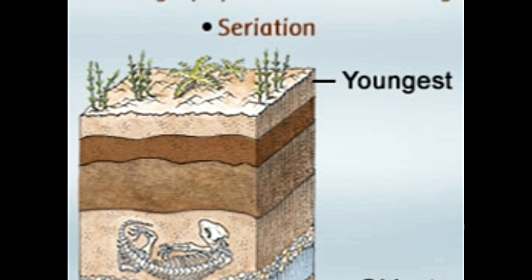Paleo-magnetic dating: every magnet has two poles — south and the north. Earth is also considered to be a huge magnet with a north and south pole, and it has a wide magnetic field. Rocks consist of minerals which can act as magnets when exposed to a magnetic field. When exposed to the Earth's magnetic field, the minerals from rocks align themselves parallel to it. Geomagnetic polarity timescale is used as a standard to understand the change in Earth's polarity over the years. This technique helps ascertain the latitude of rocks at the time of their formation. From all the above-mentioned techniques, it is crystal clear that relative dating is dependent on the order of events in entirety, rather than the age or time period of events.